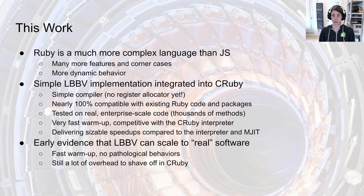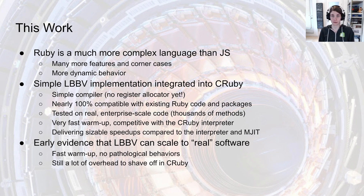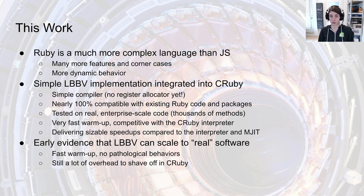In this work, we present a simple JIT compiler based on basic block versioning integrated into CRuby. Ruby is a much more complex language than JavaScript — it has many more features, corner cases, and much more dynamic behavior, which makes it harder to optimize. Our compiler is simple and doesn't have a register allocator yet, but our implementation is nearly 100% compatible with existing Ruby code and packages. It's been tested on real enterprise-scale software with thousands of methods, produces very fast warm-up competitive even with the CRuby interpreter, and sizable speedups compared to the interpreter and MJIT. We take this as early evidence that lazy basic block versioning can scale to real-world software.